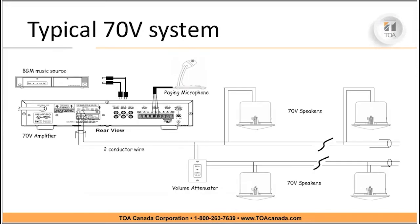Also, smaller cable than low impedance can be used. Simple wall attenuators or 70 volt volume controls can be used to adjust one or several speakers in each zone. Here we see a typical diagram of a 70 volt system, composed of a background music source, a paging microphone, a 70 volt mixer amp, speaker lines, and volume attenuators connected to speakers — this is the typical architecture of a 70 volt system.